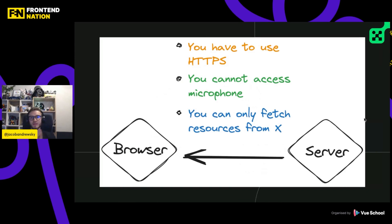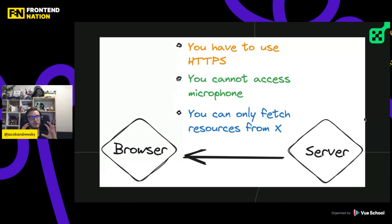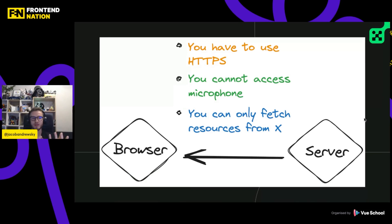The last risk is misconfigured browser. We as developers can configure our browser to be protected against certain issues. For example, we can say that we only accept HTTPS connections, we don't allow certain features such as microphone to be enabled, or we only allow fetching resources on our website from a certain domain.